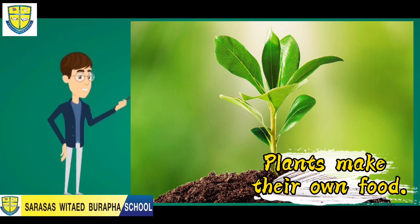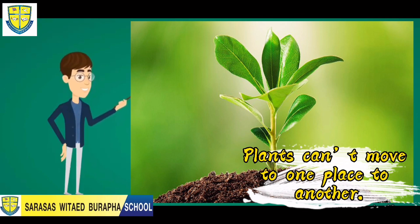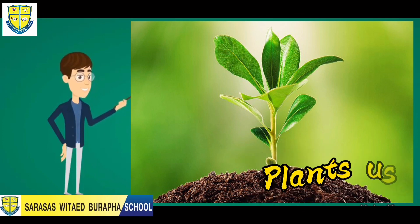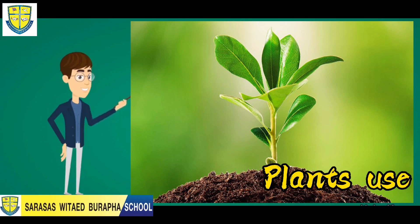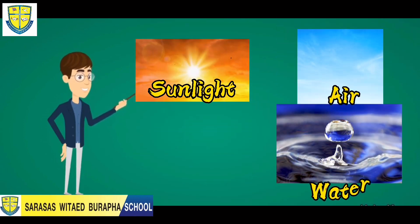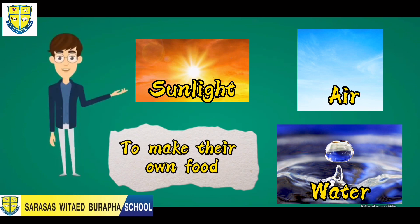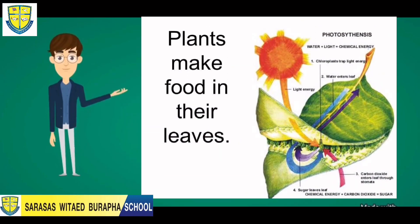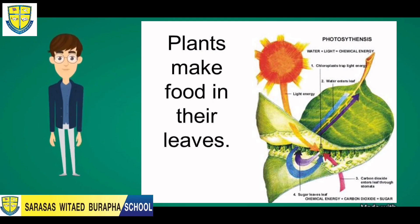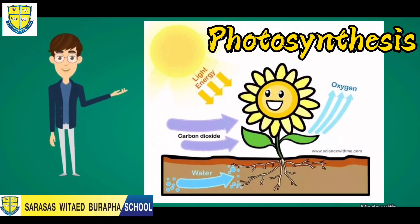Unlike other living things, plants cannot move from one place to another. Plants use sunlight, air, and water to make their own food. Plants make their food in their leaves, and this process is what we call photosynthesis.